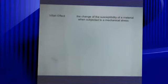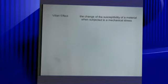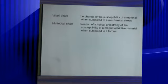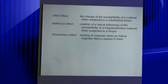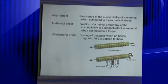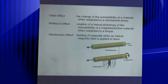Related effects include the Villari effect — the change of susceptibility of a material when mechanical stress is applied — and the Wiedemann effect, which is the creation of electrical anisotropy of susceptibility of magnetic materials when a torque is applied. There is also a twisting effect when electric and magnetic fields are applied simultaneously. For example, applying a current in a ferromagnetic tube while applying a magnetic field changes the direction of magnetic moments and causes twisting.